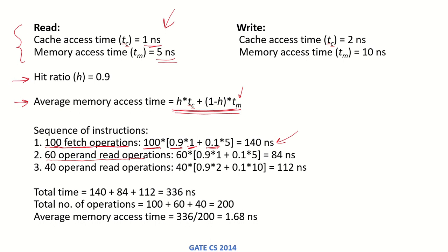There are 60 operand read operations, so again applying the same formula with the values for the read operation: 60 × (0.9 × 1 + 0.1 × 5), which gives us a total of 84 nanoseconds. Then there are 40 operand write operations.